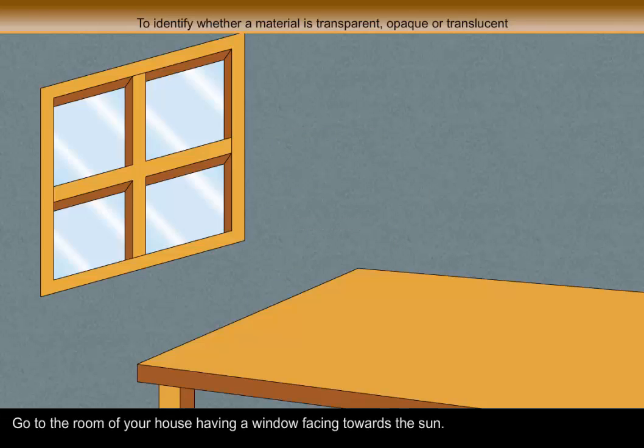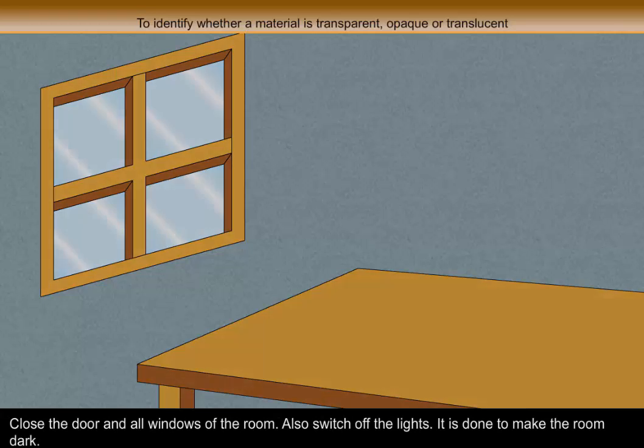Procedure: Go to the room of your house having a window facing towards the sun. Close the door and all windows of the room, also switch off the lights. It is done to make the room dark.